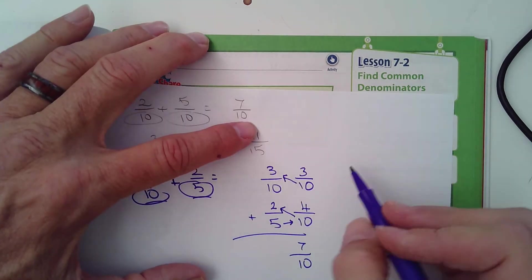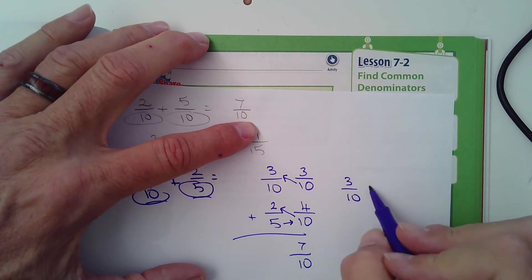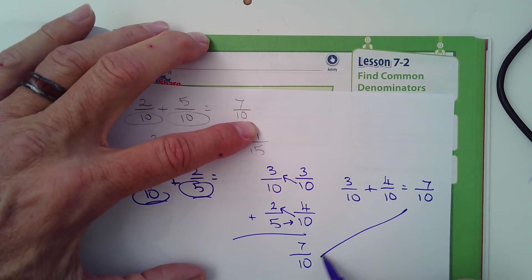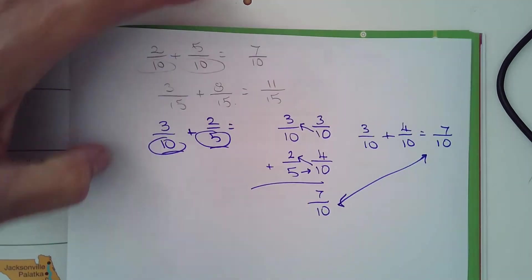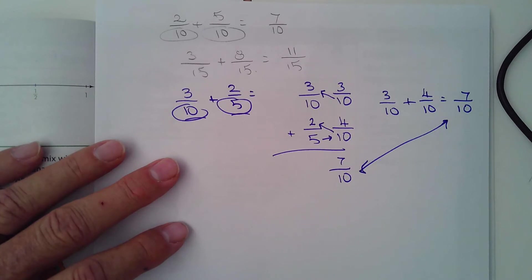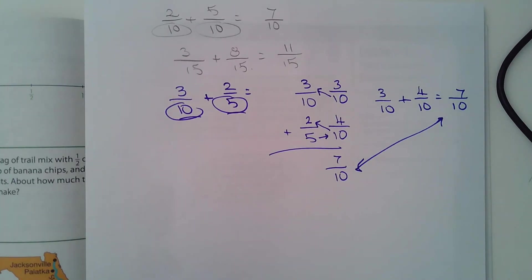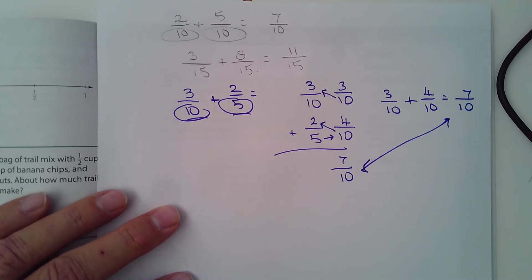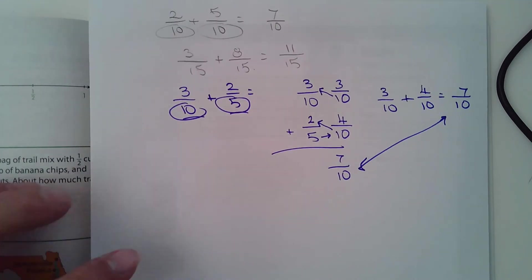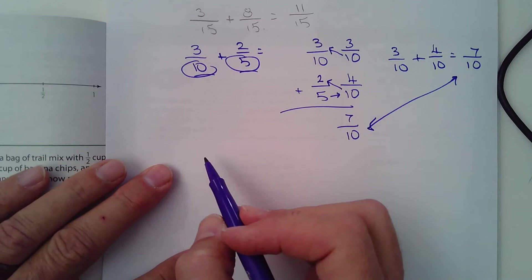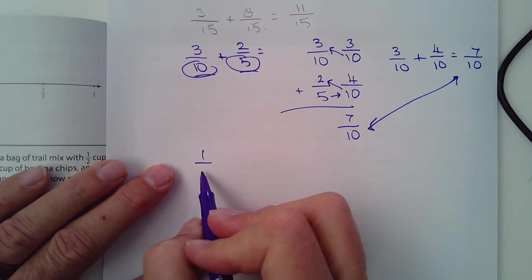Now we have the same denominators. They're both tens. So what do we do? We just add the numerator. So three and four, seven. So the answer is 7/10. If I wrote it like this, you know, like 3/10 and then plus what did we convert it to, 4/10, and the denominator stays the same. Three and four, seven, 7/10. And you can see that they're the same thing. So that's what they're asking you to do in this section, finding common denominators.